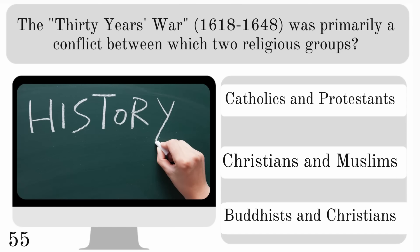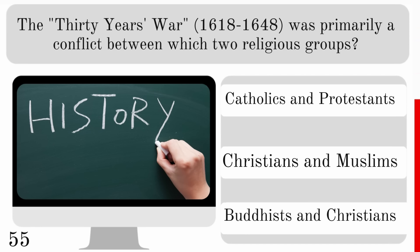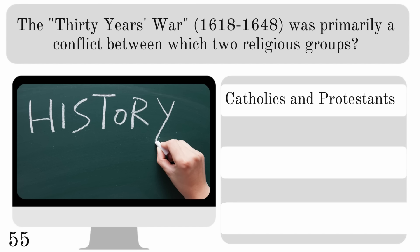The Thirty Years' War was primarily a conflict between which two religious groups? Catholics and Protestants, Christians and Muslims, or Buddhists and Christians? And the answer is Catholics and Protestants.